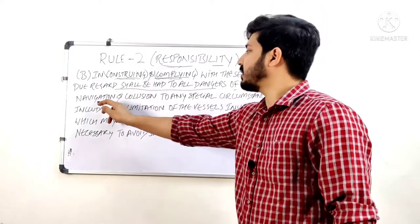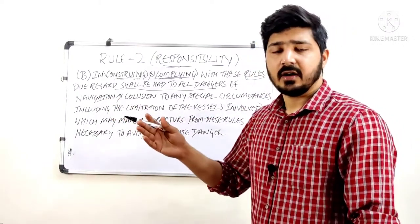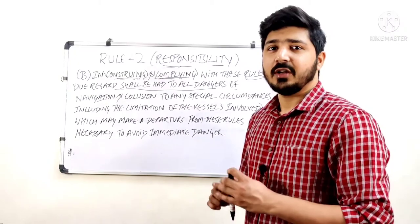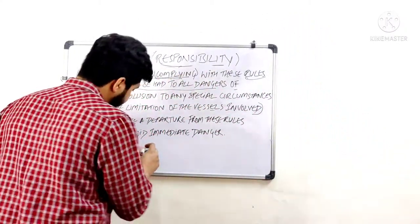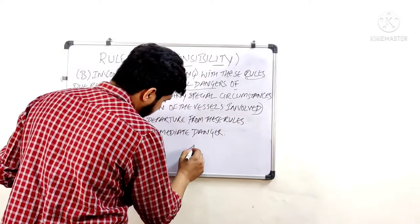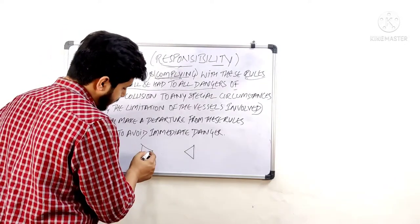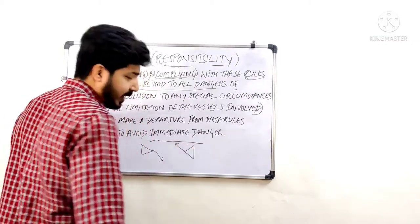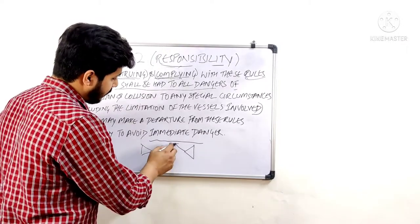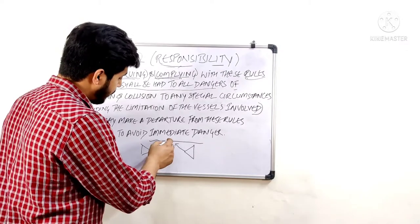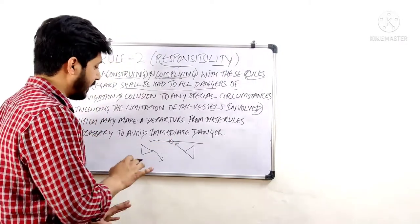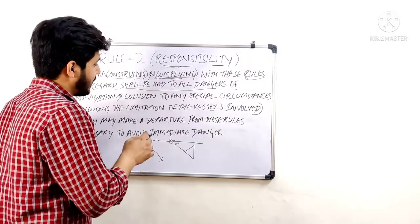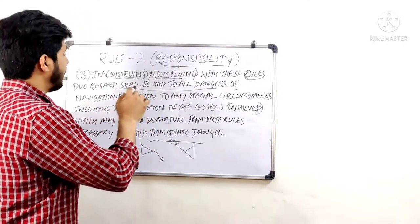What are dangers of navigation? Let's say there is a wreck and you want to alter course to starboard — but there is a wreck on the starboard side. Take a head-on situation as an example: as per Rule 14, both vessels should take alteration to the starboard side. But let's say here there is a shallow patch. You cannot alter to starboard as per the rules because if you do, you are going to run aground. So you have to be careful about the dangers of navigation while following the rules.